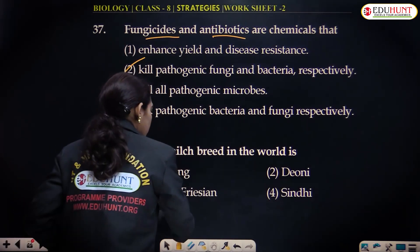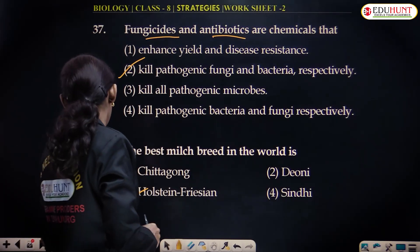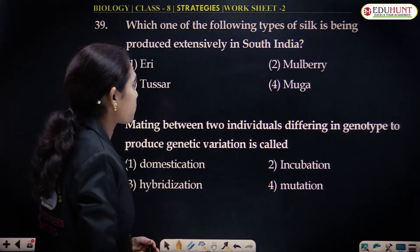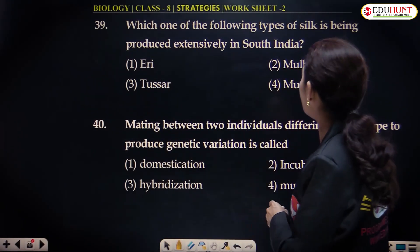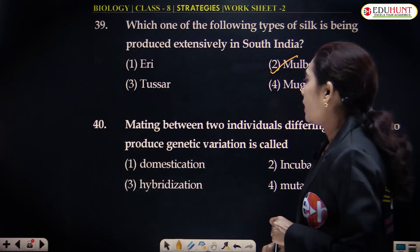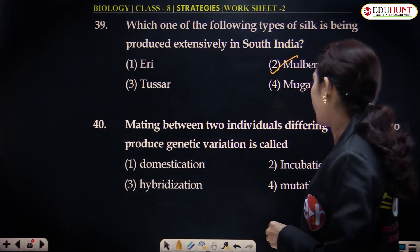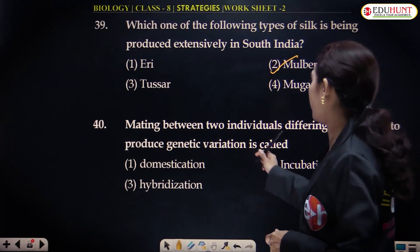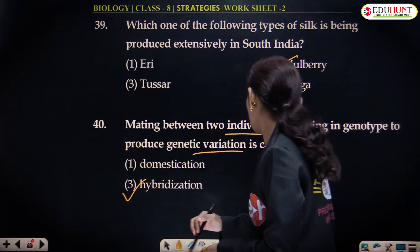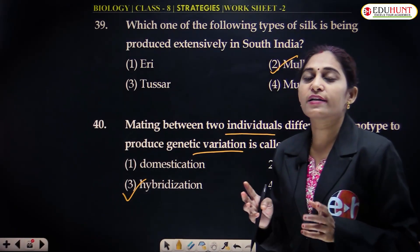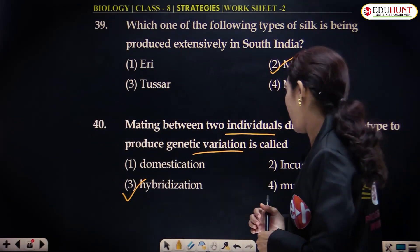The best milch breed in the world is Holstein Frisian. Mulberry silk is produced extensively in South India. Mating between two individuals differing in genotype to produce genetic variation is called hybridization, in which two genetically different parents are crossed to obtain a genetically varied progeny.